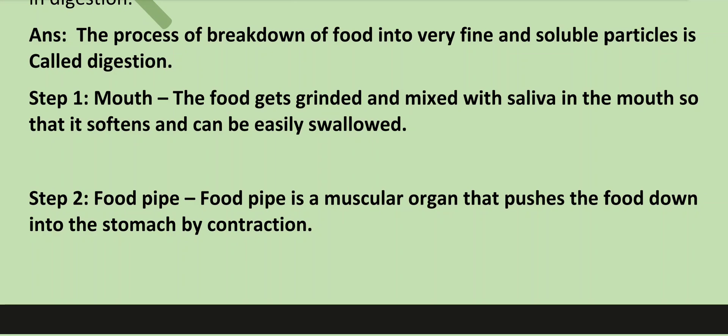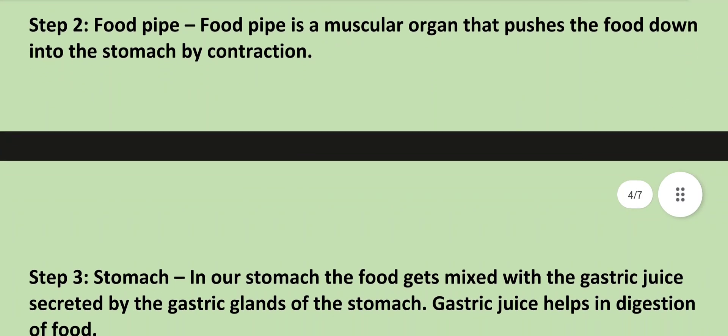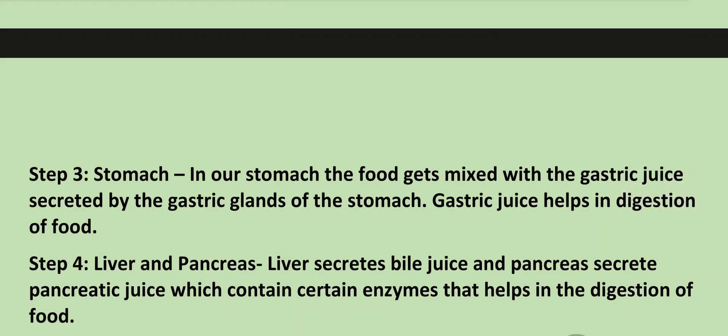Step two — Food pipe: the food pipe is a muscular organ that pushes the food down into the stomach by contraction. Step three — Stomach: the food gets mixed with gastric juices secreted by the gastric glands of the stomach, which helps in digestion. Step four — Liver and pancreas: the liver secretes bile juice and the pancreas secretes pancreatic juice, which contains enzymes that help in digestion.